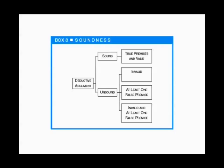Now look at the unsound branch. Unsound arguments fail due to one or more of three factors: they're either invalid, or they have at least one false premise, or they're both invalid and contain at least one false premise. One technical note: some logicians wouldn't consider an argument with an invalid form to be a deduction at all, since the very definition of deduction entails validity.